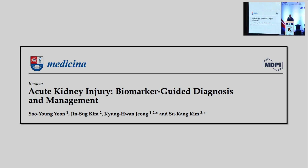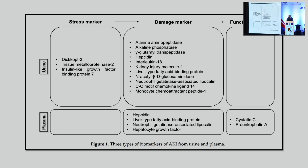We now come to biomarker-guided diagnosis and management — having something to help creatinine identify AKI and help manage these patients. We have injury biomarkers and functional biomarkers, and now we are also talking about stress biomarkers — something detectable before the injury has happened — of which TIMP2 and IGBP7 are the front runners.